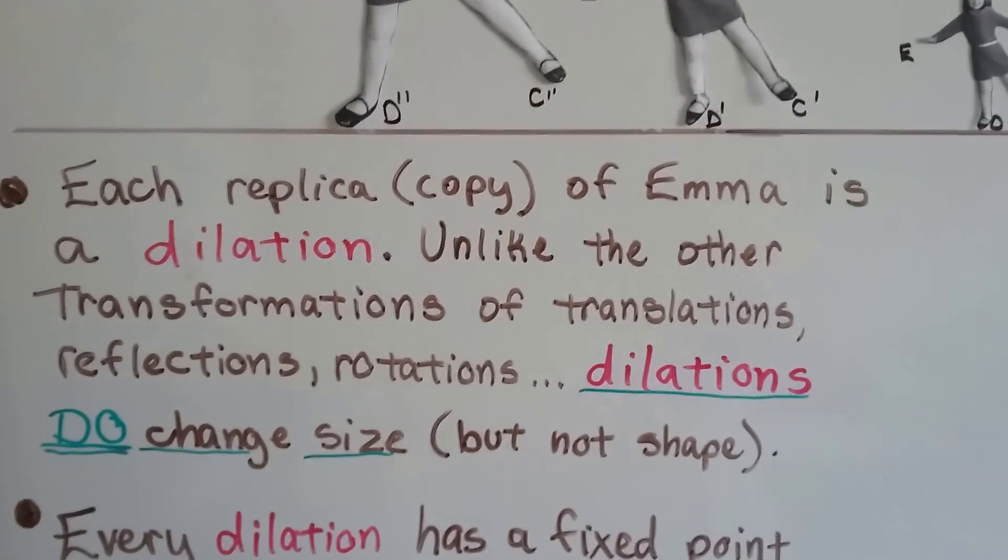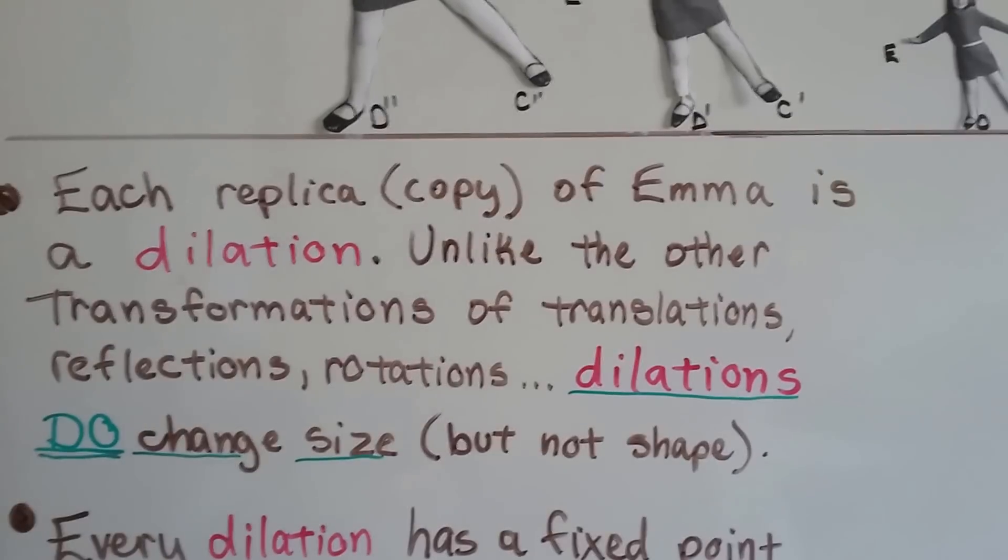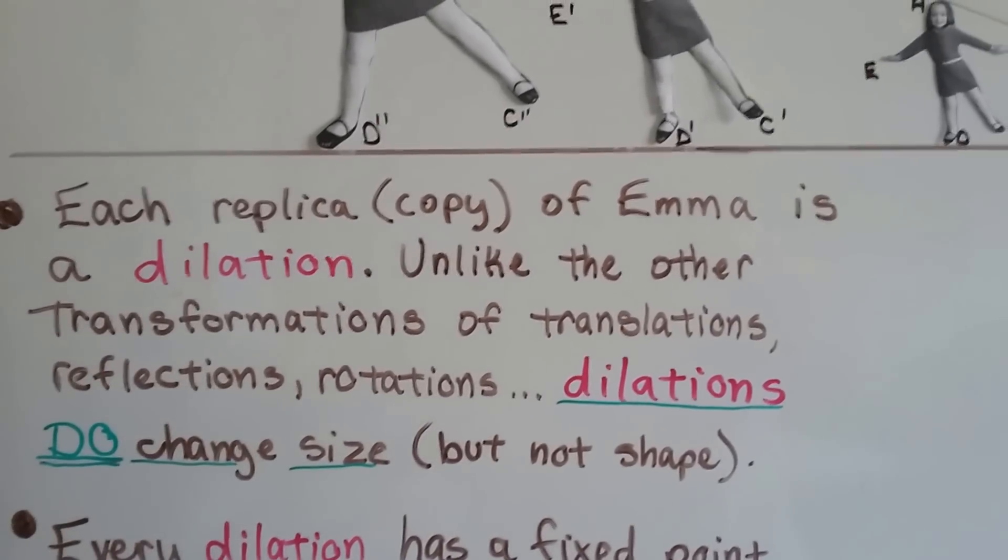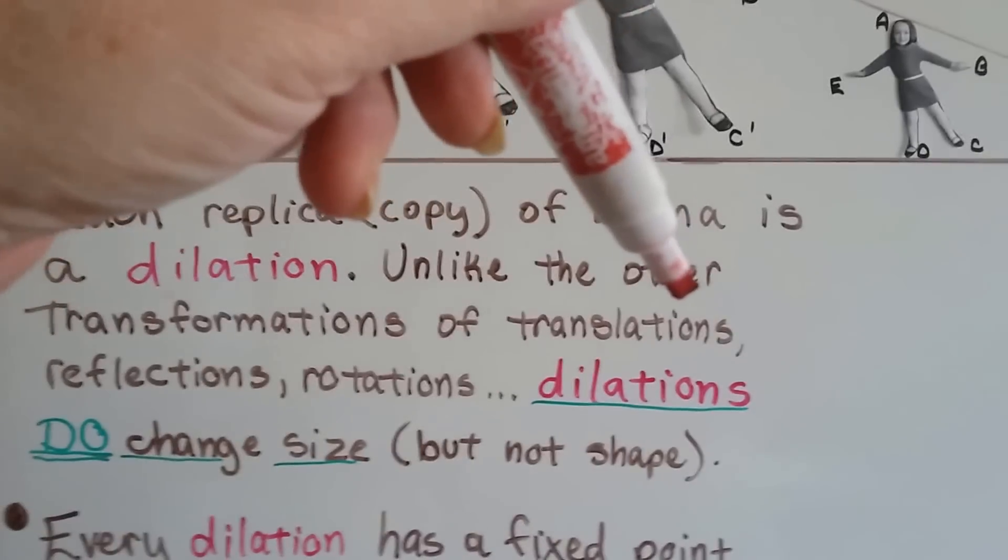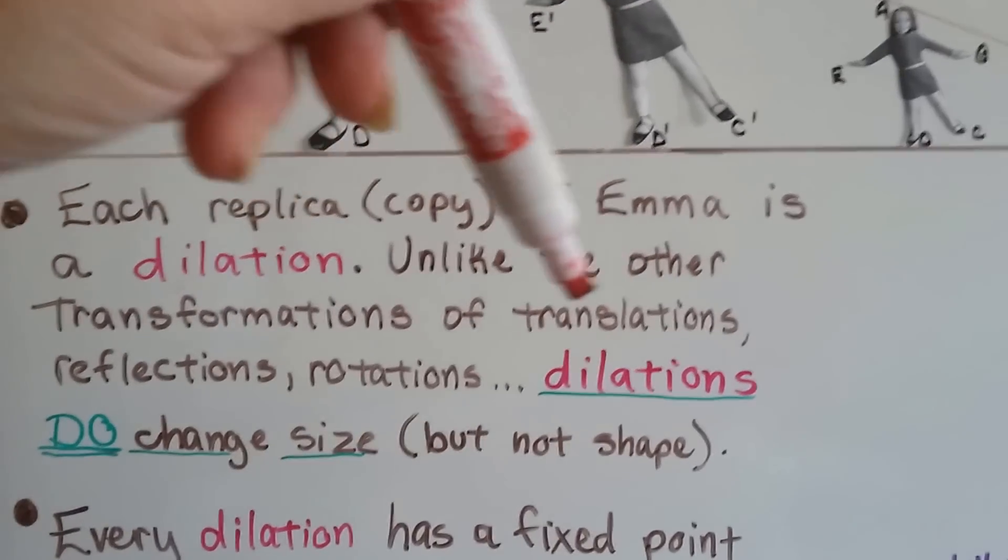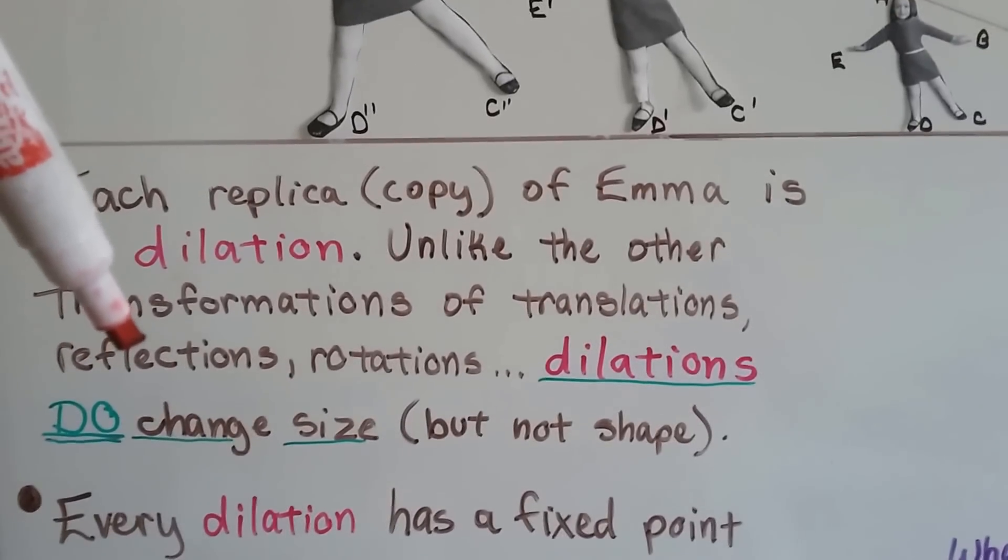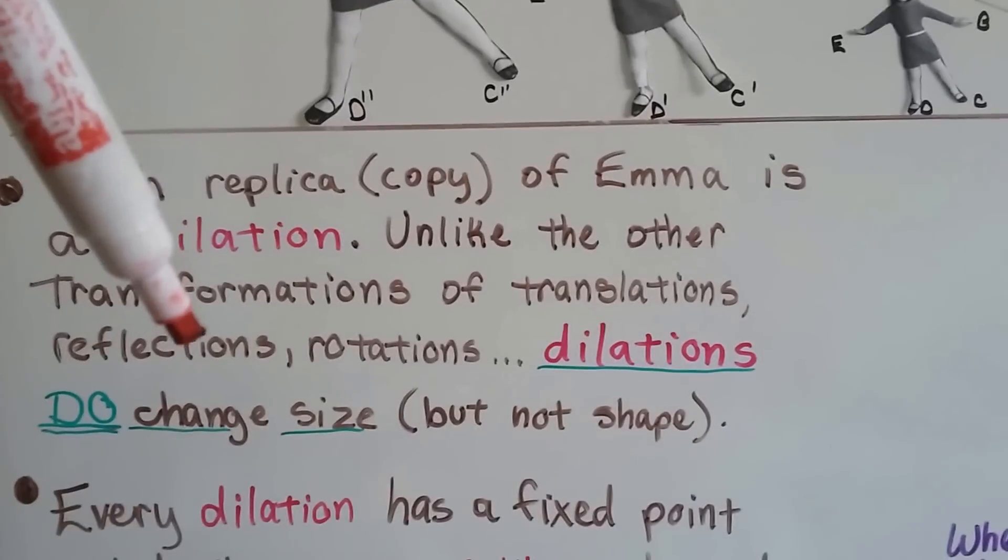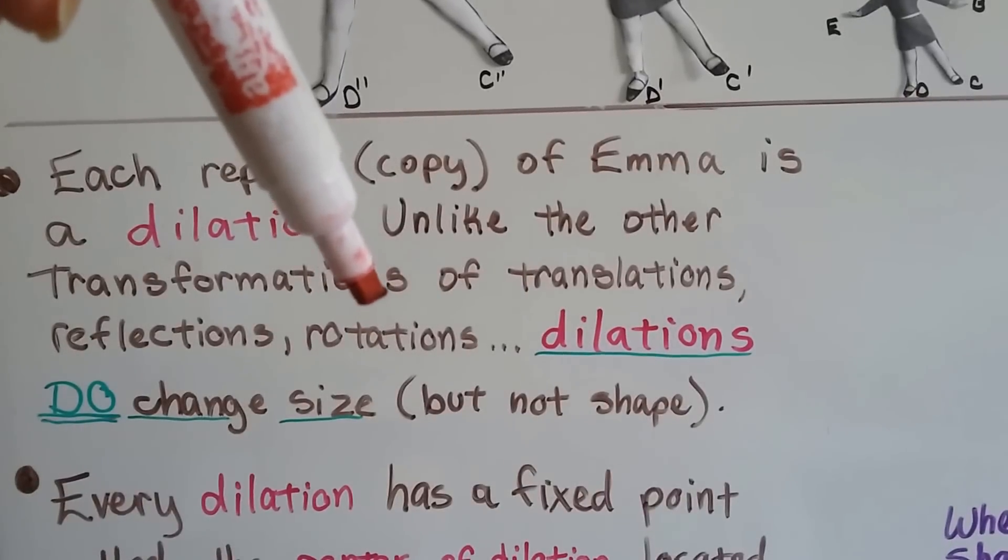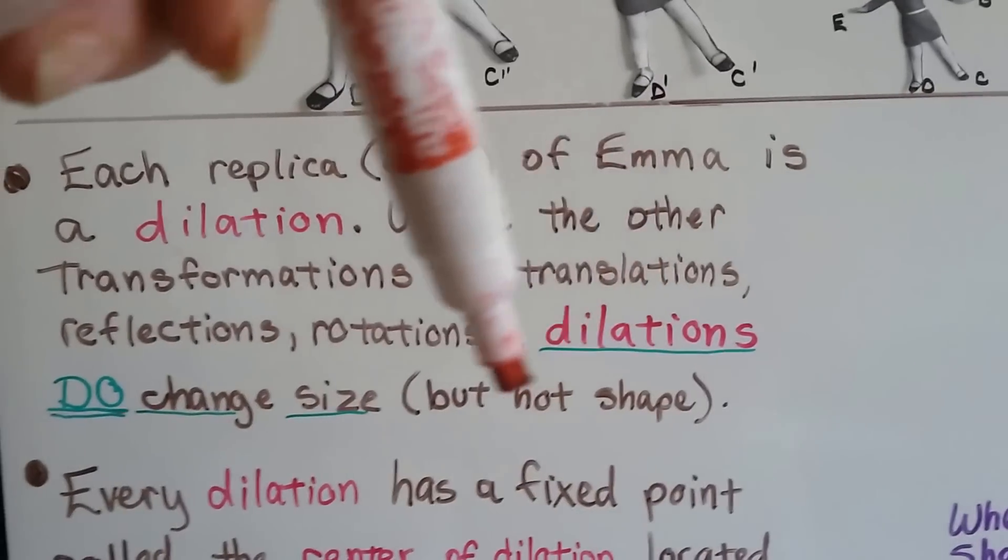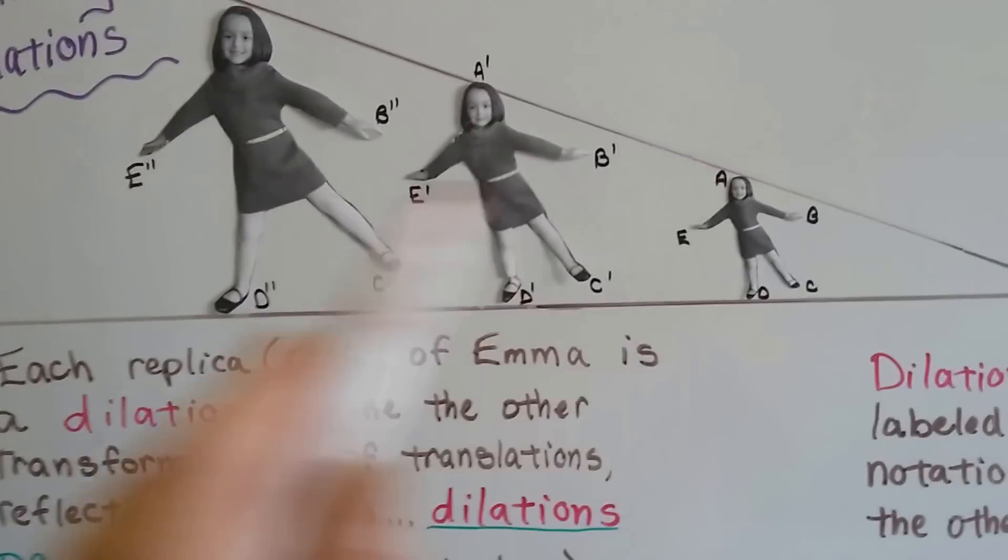Unlike the other transformations of translations, reflections, rotations, dilations do change a size, but not the shape. So, remember in translations, they slid and the size and shape didn't change, and the orientation didn't even change. In the reflections, the size and shape didn't change, but the orientation did change. Same with rotations. The size and shape did not change, but the orientation did. Well, now with these dilations, the size is going to change, but not the shape.